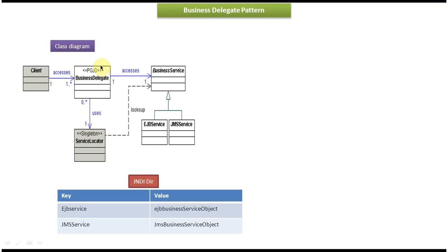The first class is Client. The second one is Business Delegate Class. The third one is Service Locator Class. And the fourth one is Business Service Interface. This Business Service Interface is implemented by EJB Service Class and GMS Service Class.